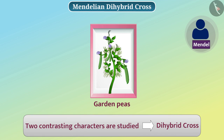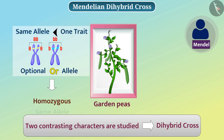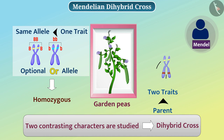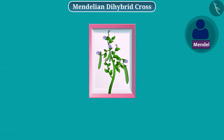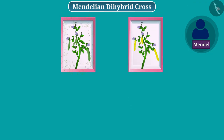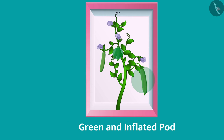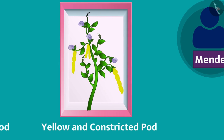We know that organisms that have the same allele for a trait are homozygous for that trait. Parents taking part in dihybrid cross are homozygous for two traits. In a dihybrid cross, Mendel selected two homozygous plants. In one, the pods were green in color and inflated, and in the second plant, pods were yellow in color and constricted.